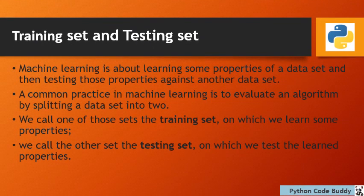Another important part of the machine learning framework is the training set and the testing set. Machine learning is about learning some properties of a data set and then testing those properties against another data set. A common practice is to evaluate an algorithm by splitting a data set into two — the training set, on which we learn properties, and the testing set, on which we test the learned properties.